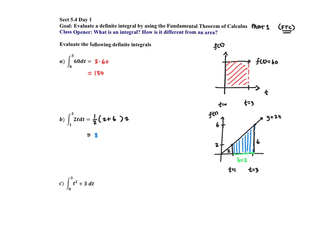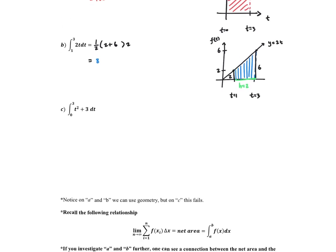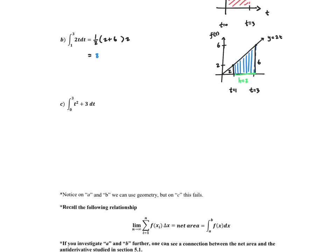Let's continue with Part C. Part C is unique — using geometric methods, we won't be able to calculate this area with 100% accuracy, due to the fact that the curve T squared plus 3 is not linear in any way, shape, or form. We would have to utilize a rectangular approximation method, whether it be R-RAM, L-RAM, trapezoid, or midpoint.